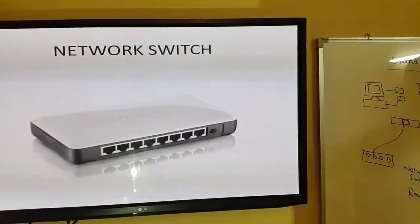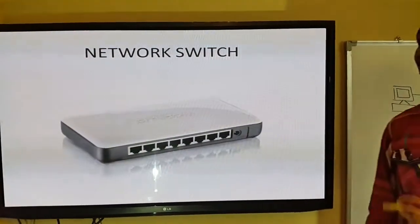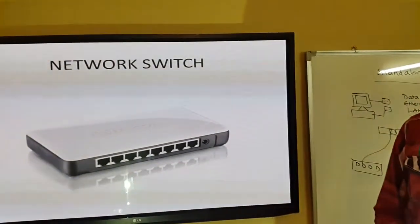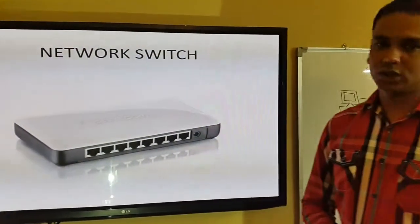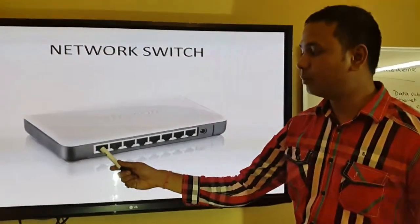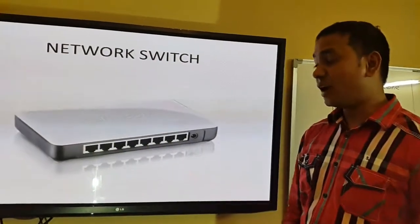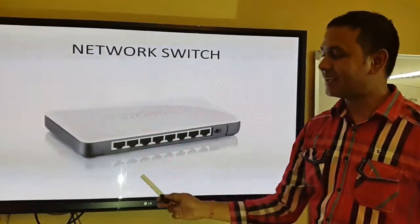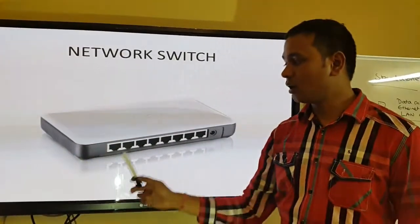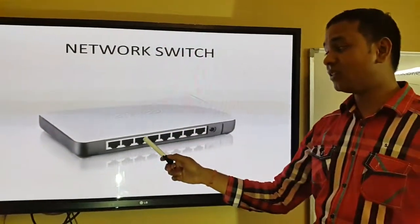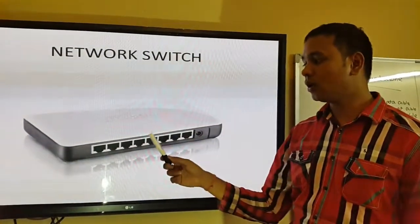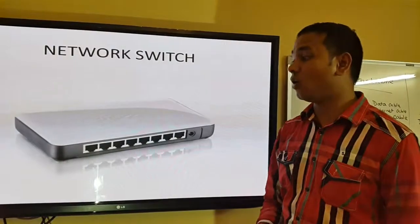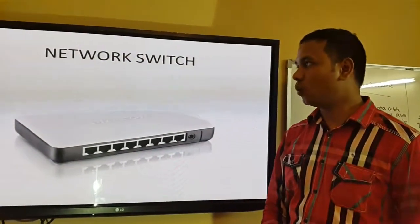Now, for us to understand how we can connect different types of devices on a network, we need what we call a network switch. A network switch is a device with multiple ports, and on each of those ports you can connect a LAN cable to one device. For example, the first port can go to a laptop, the second port to your PC, the third port can connect to a printer — a network printer — and the fourth port can connect to an IP camera. So basically, if you want to connect different types of devices on a network, you need a network switch.